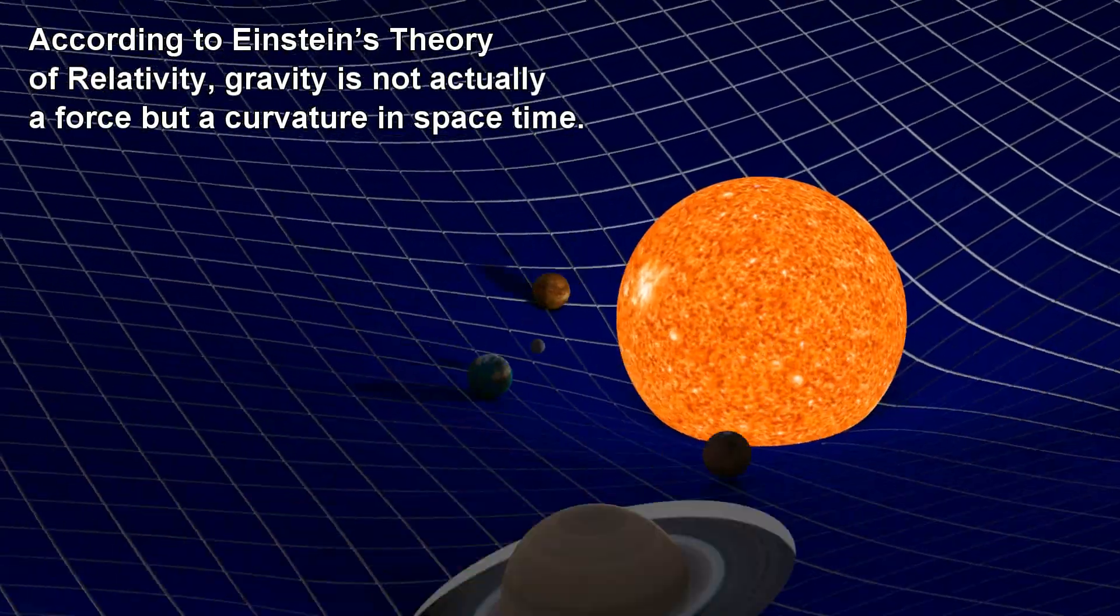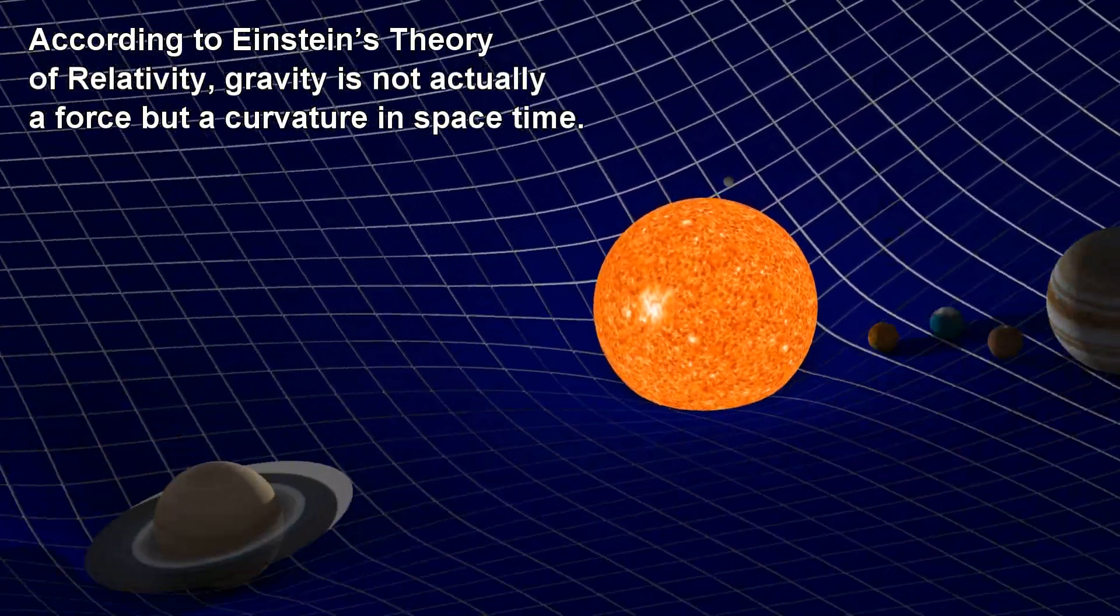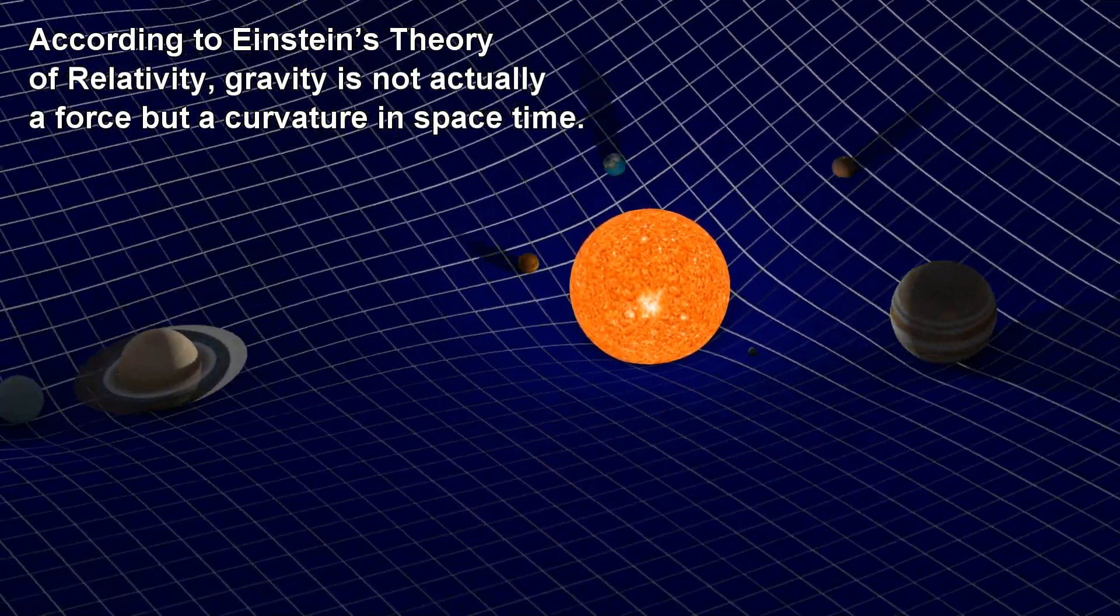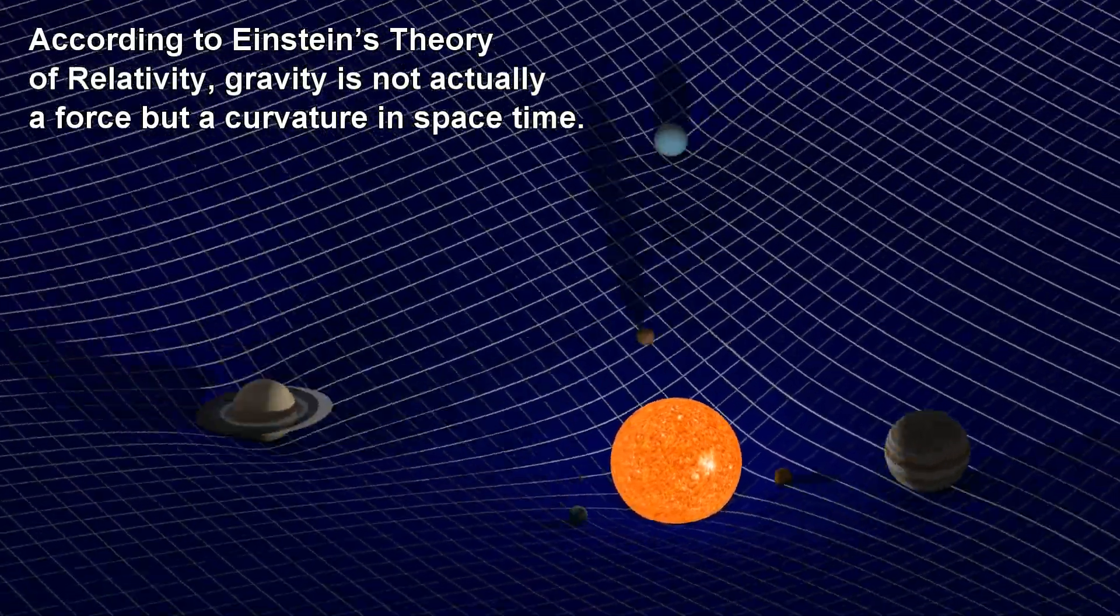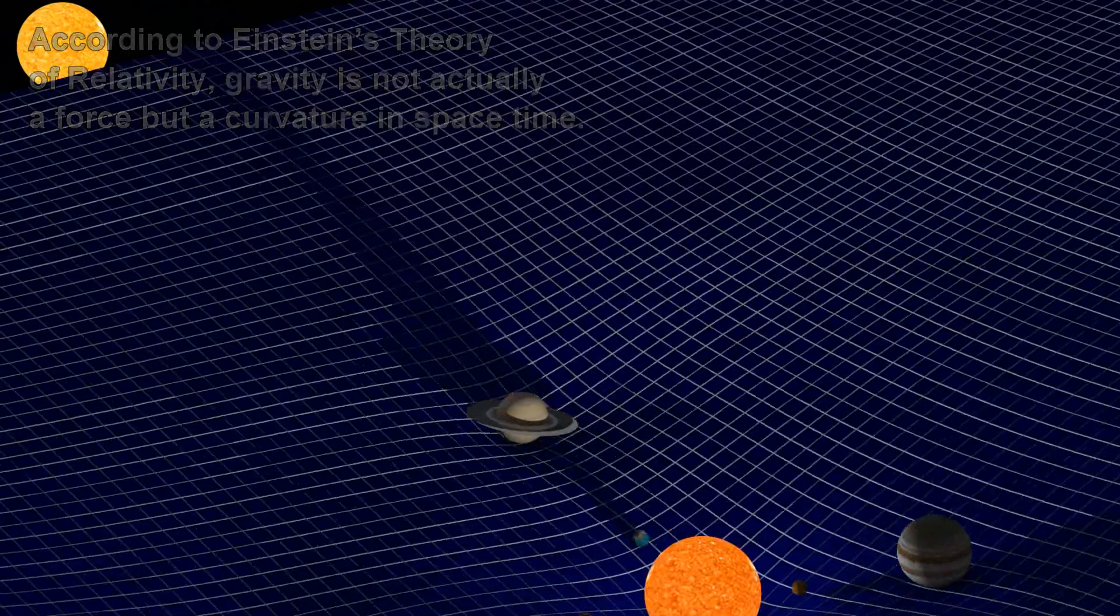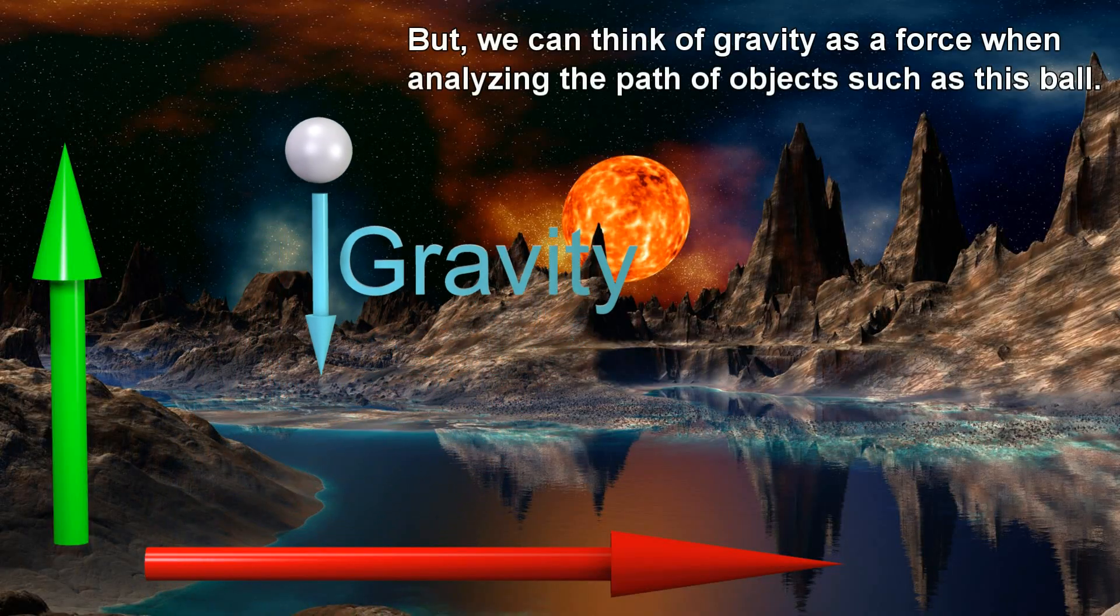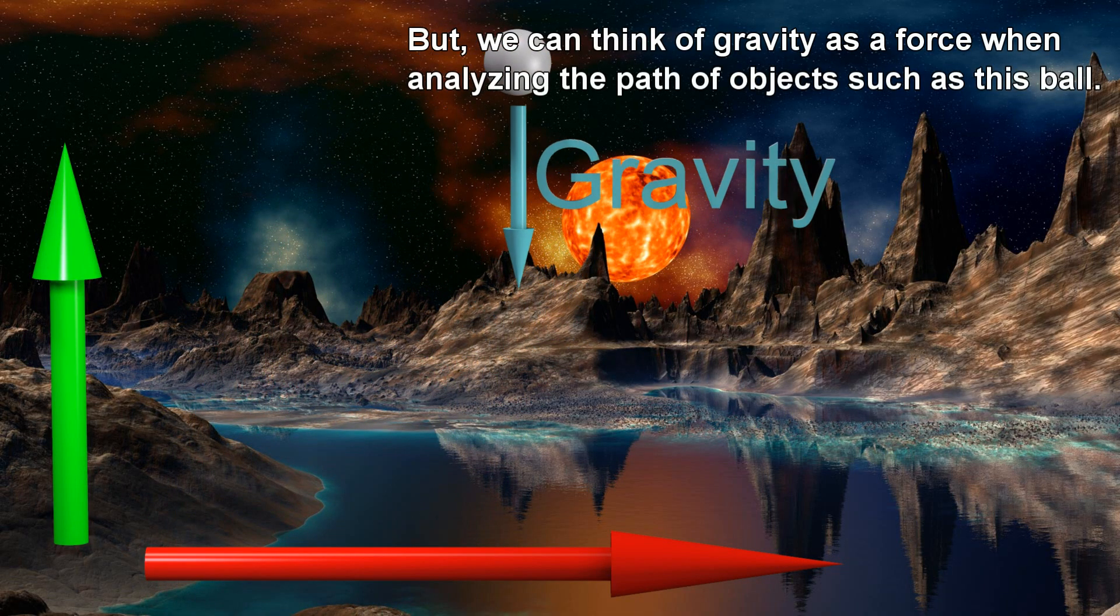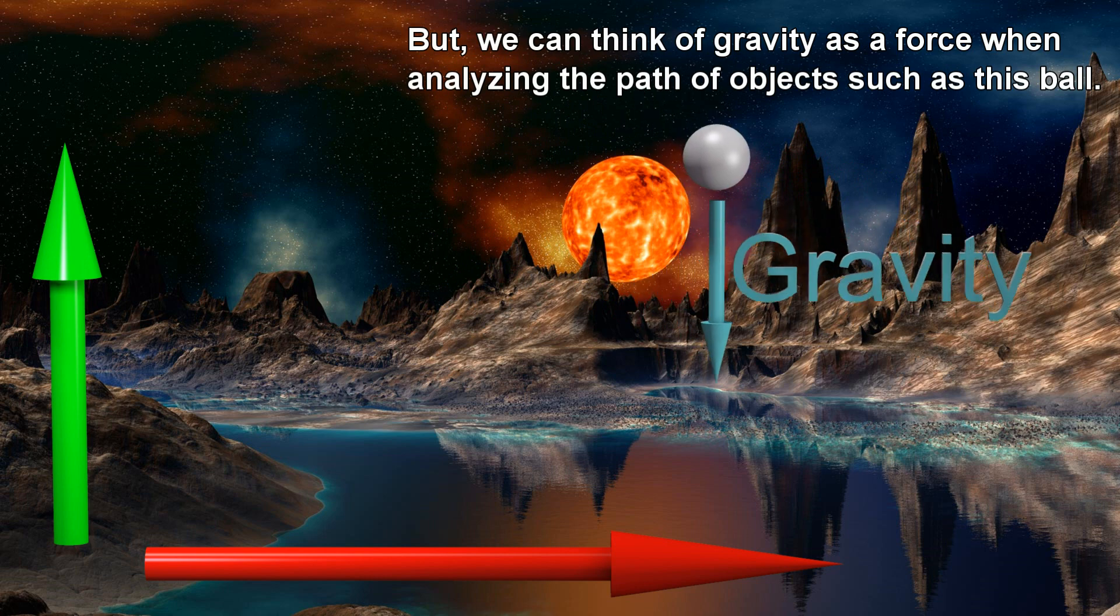According to Einstein's theory of relativity, gravity is not actually a force, but a curvature in space-time. But we can think of gravity as a force when analyzing the path of objects such as this ball.